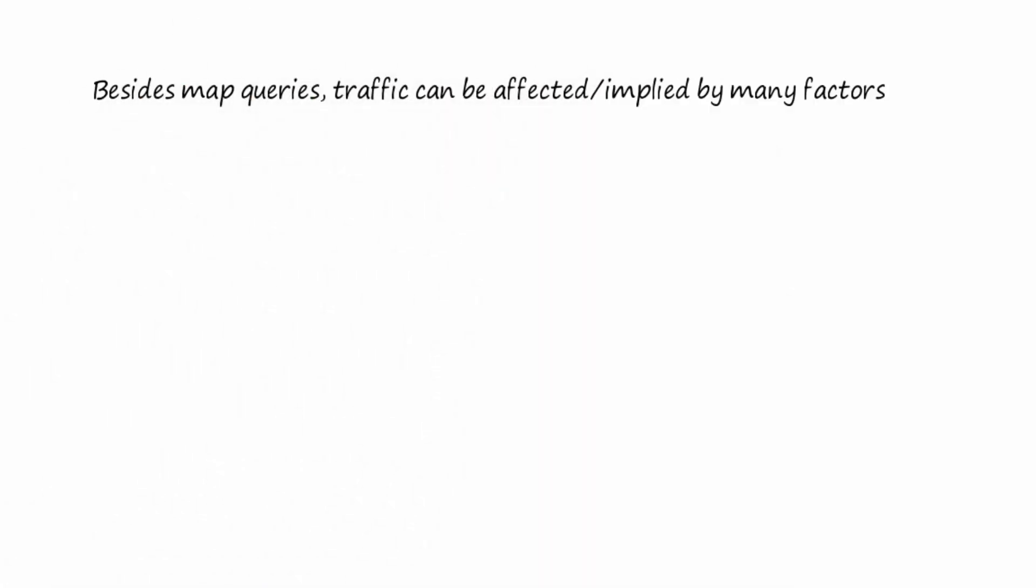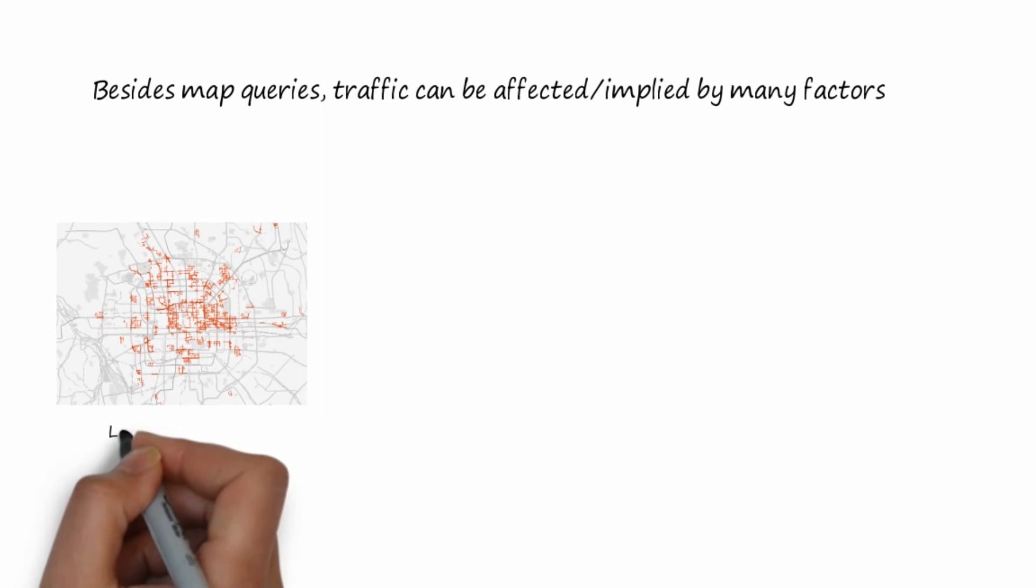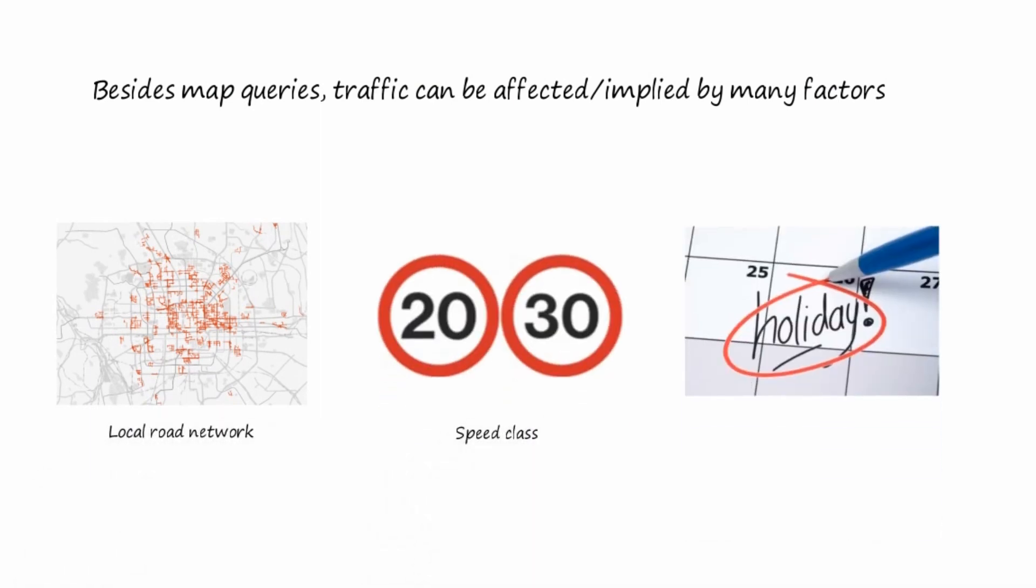Besides map queries, traffic can be affected by many factors, such as local road network, speed class, and public holidays.